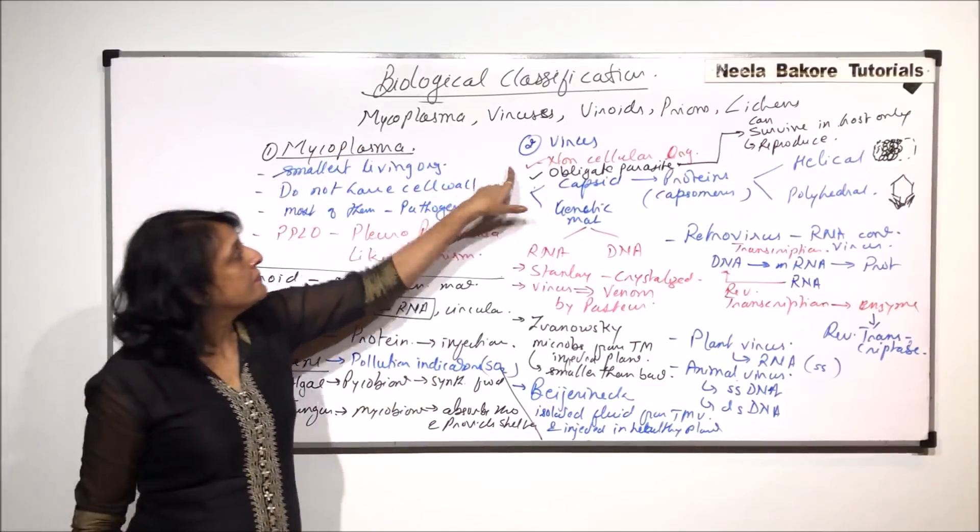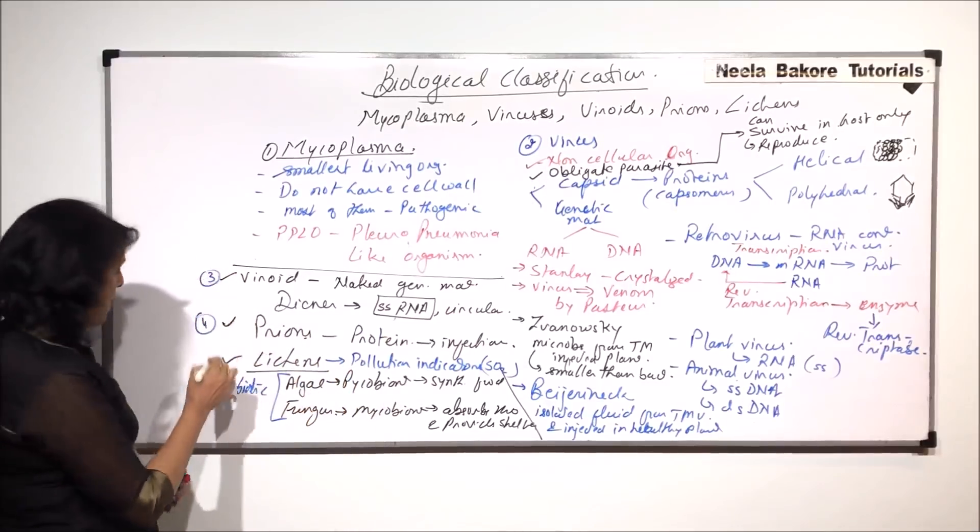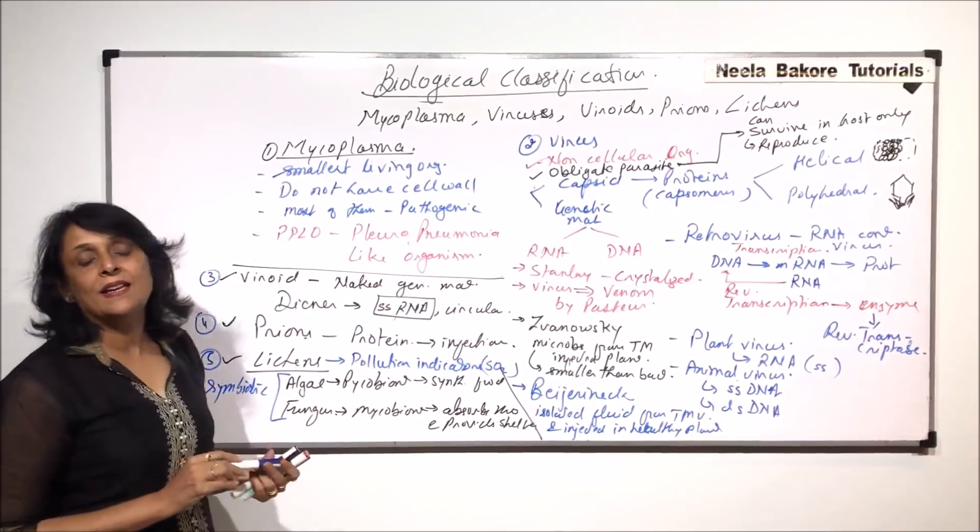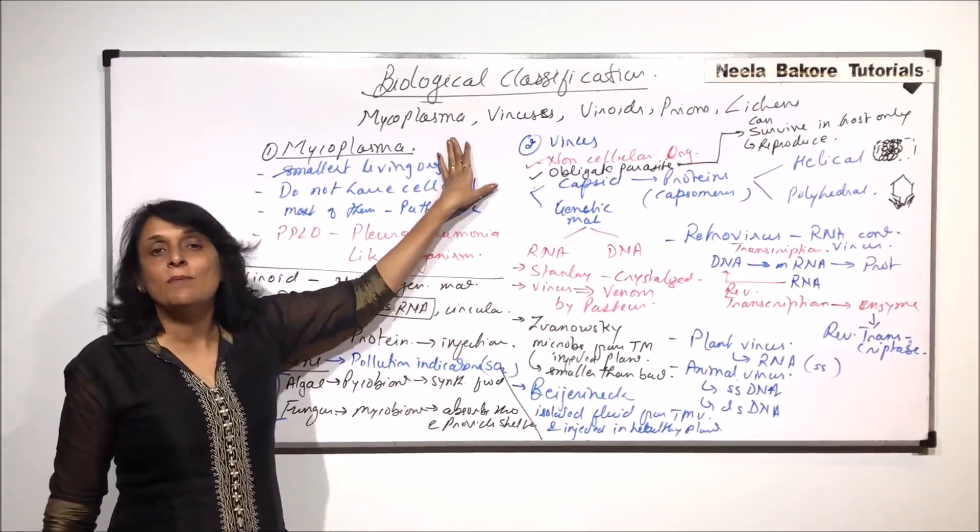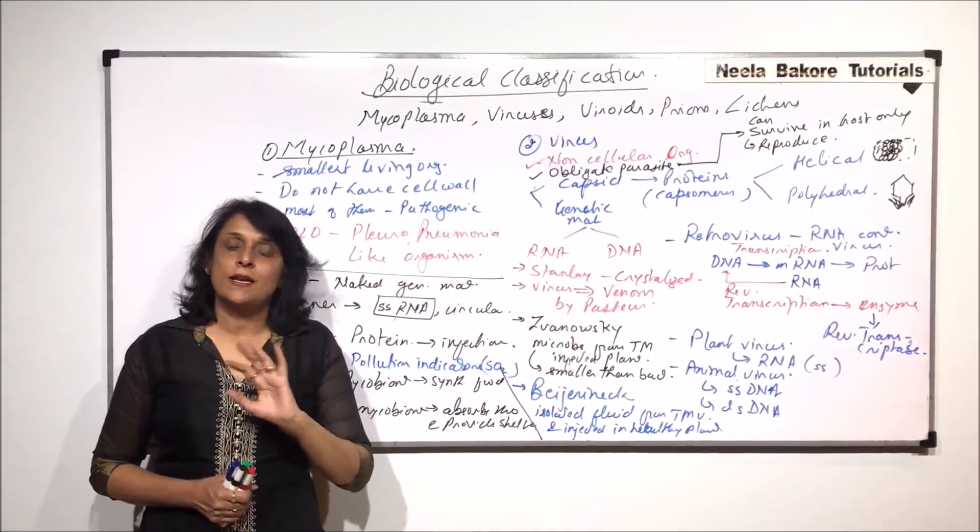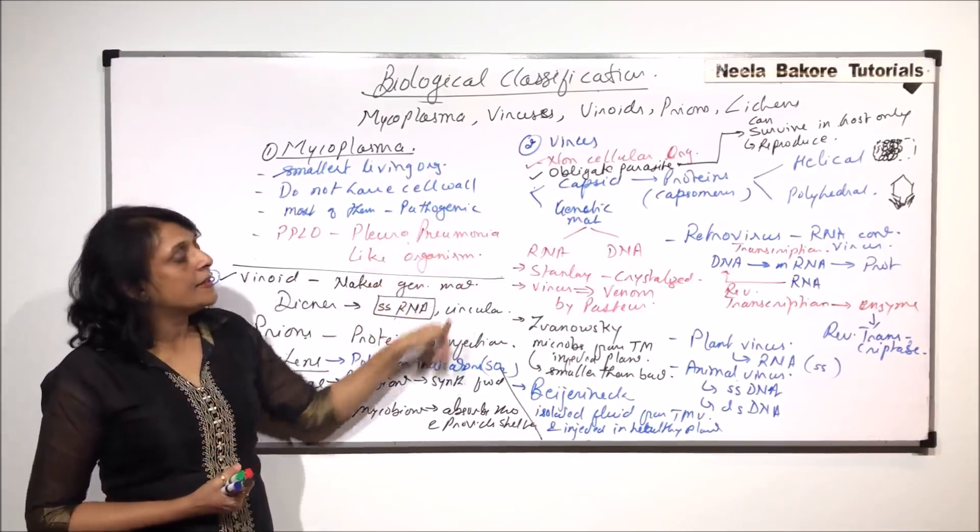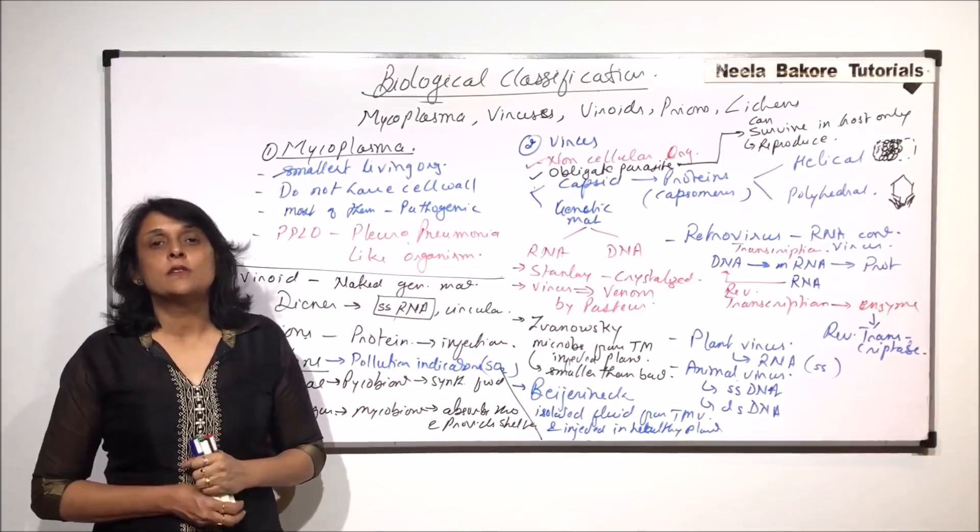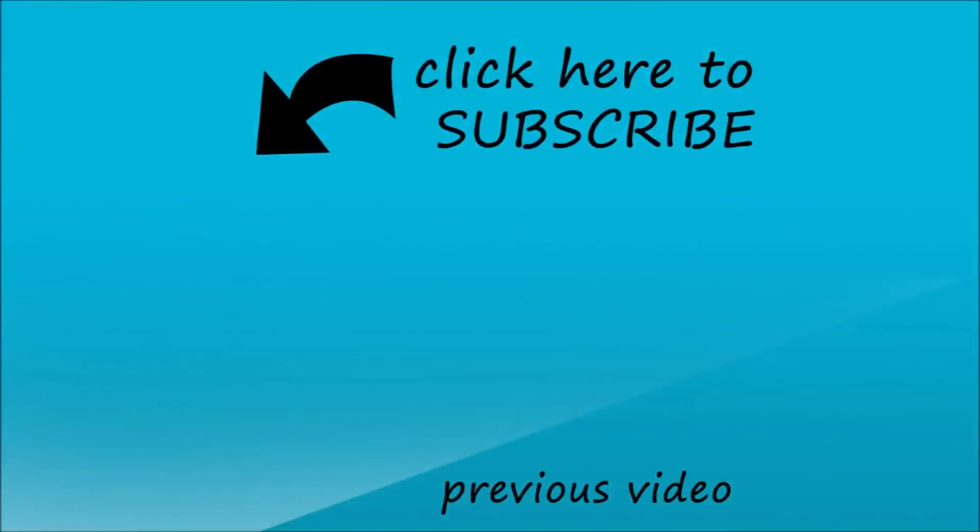We have talked of mycoplasma, virus, viroid, prions, and lichens. Out of these, only mycoplasma could be placed into kingdom monera, and all others did not find any specific place in Whittaker's classification. We have completed kingdom monera and certain other organisms. From the next part we will take the next kingdom, that is kingdom protista.